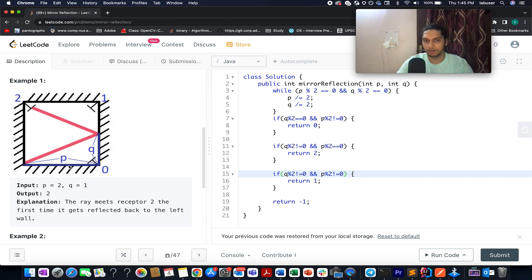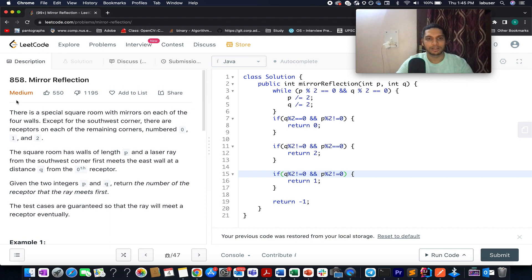What we need to do, we need to identify onto which receptor the beam will finally land upon. Will it be 0, will it be 1 or will it be 2? So this is the ask of the question and without further ado, let's quickly jump onto the presentation where I will be talking about the algorithm and how to identify the approach.